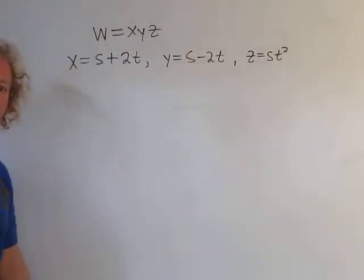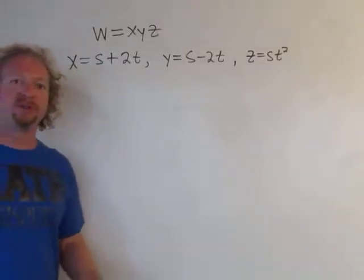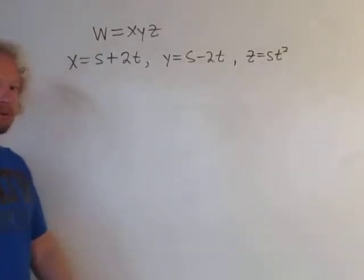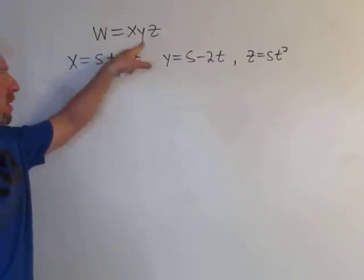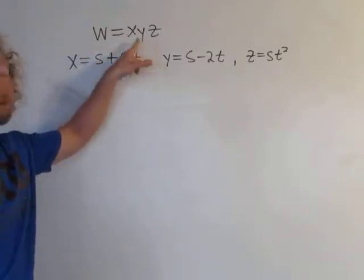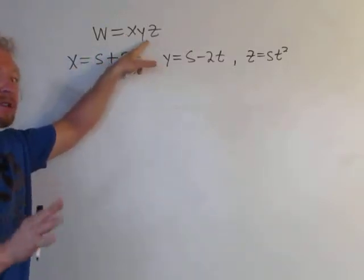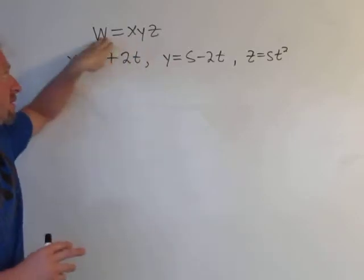In this video, we're going to find some partial derivatives using the chain rule from calculus. We have x, y, and z, so w is a function of x, y, and z.